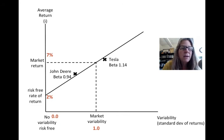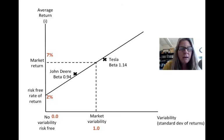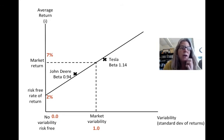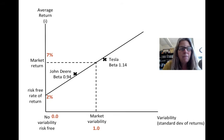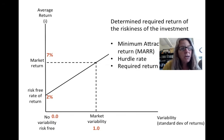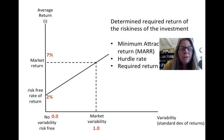I've estimated where Tesla or John Deere might be on this capital asset pricing line. What I really want you to remember is that as the variability or risk of the investment increases, the required return will also increase. There is such a thing as a no-risk investment, and you get a very low return on that. So if an investment was giving you only a 2% return but the variability was very high, we would not want to invest in that — all investments should be on that line. Companies use this to determine the required return given the riskiness of an investment. This is often called the minimum attractive rate of return, the hurdle rate, or the required return — especially MARR in engineering economy — and it is the required return for the given riskiness of the investment.